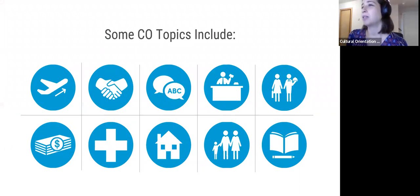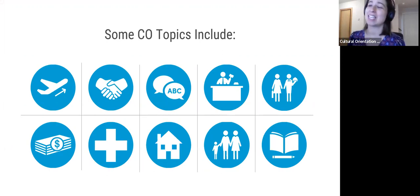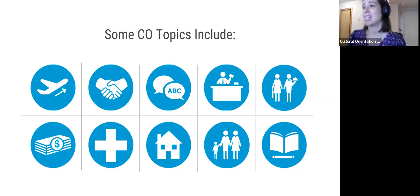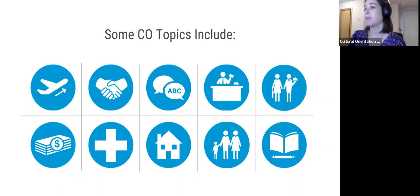Some topics covered during cultural orientation include how to find a job, housing rights and responsibilities, U.S. laws, public education for children and adults, ways to learn or practice English, how to use public transportation, banking, credit, money management, and how to navigate the healthcare system. For a full list of cultural orientation topics, you can refer to the cultural orientation objectives and indicators on CORE Resource Exchange, which is CORE's main website. Ella will provide the link in the chat.